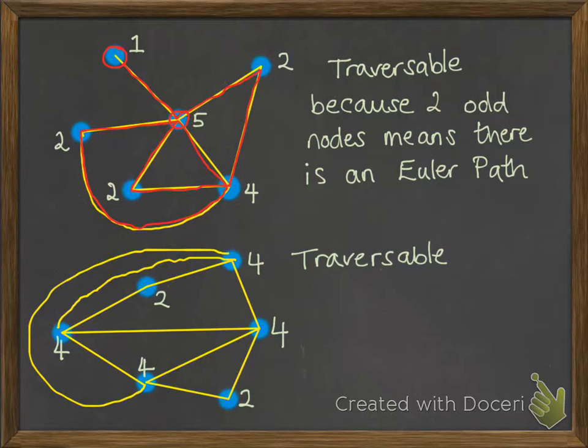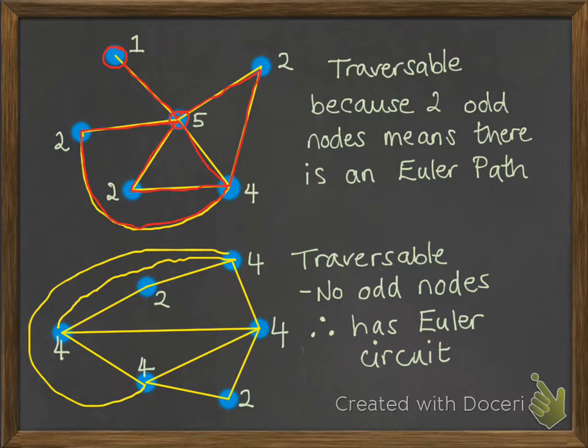That means that this will be traversable because there are no odd nodes. And that means we'll be able to create an Euler circuit. Now with an Euler circuit it shouldn't matter where you start. You can create your circuit through the whole of the network diagram.